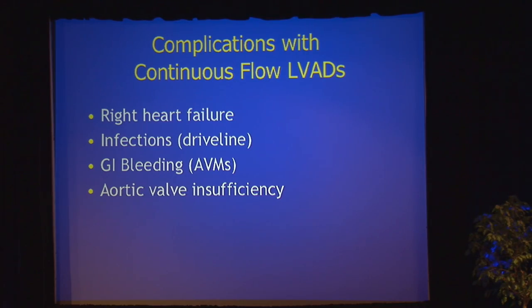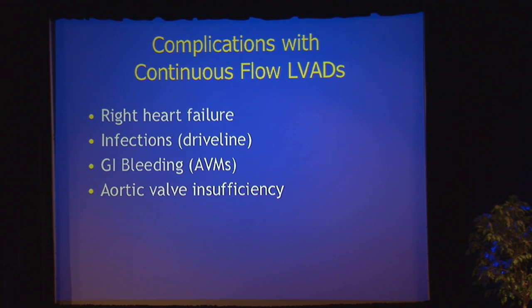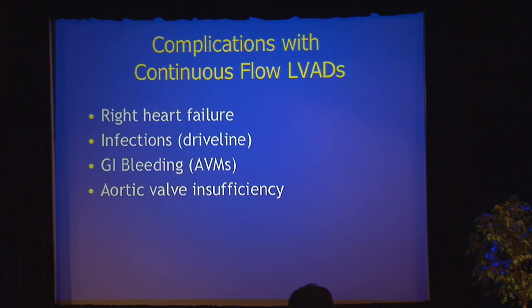You have a driveline exiting the body — it's an external foreign object breaking the skin. Not surprisingly, those can get infected, and we see driveline infections. A lot of these patients get GI bleeding through AVMs. People believe it's similar to the pathophysiology of what you see with aortic stenosis, where you have a narrow pulse pressure — perhaps due to shearing of von Willebrand factor — though it's not yet clear. This is a real clinical problem with significant recurrent GI bleeds due to AVMs.